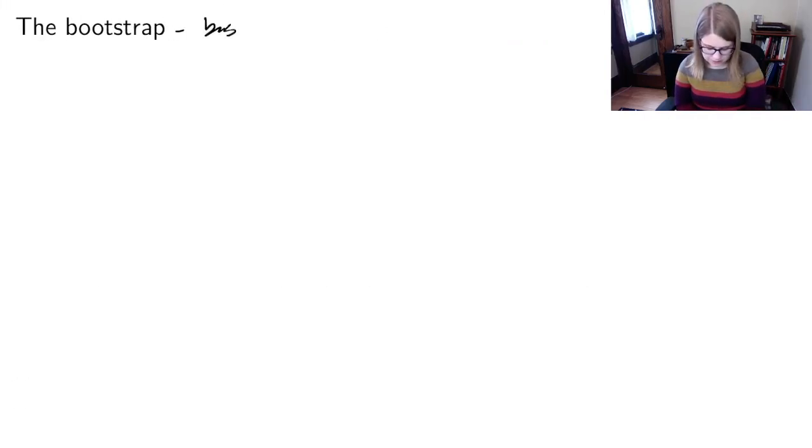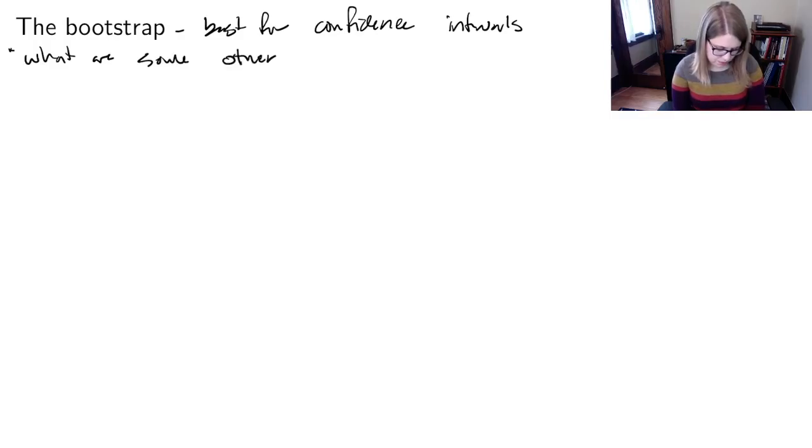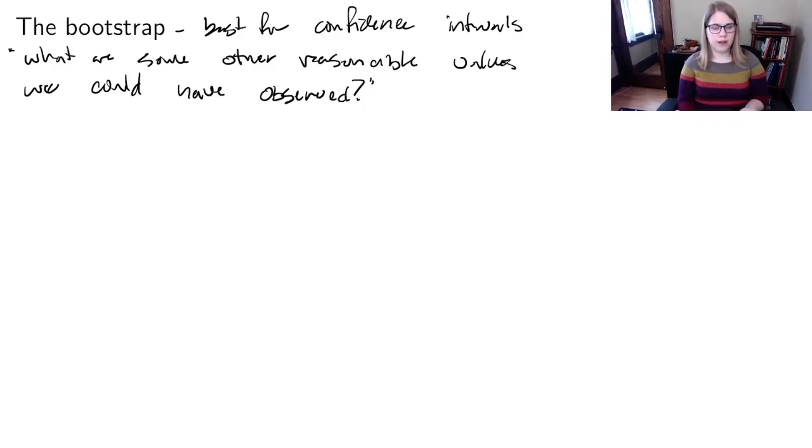Our other simulation technique is the bootstrap, and this is best for confidence intervals. The question here is: what are some other reasonable values we could have observed? We saw a particular slope value, but we could have drawn a different random sample and that would have given us a slightly different slope. So we want a confidence interval that would be what are some other reasonable values we could have observed.